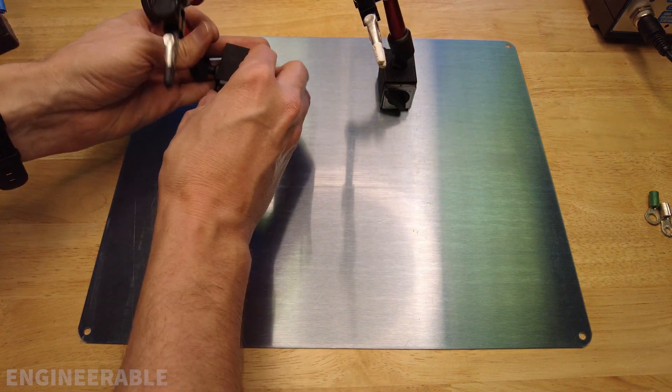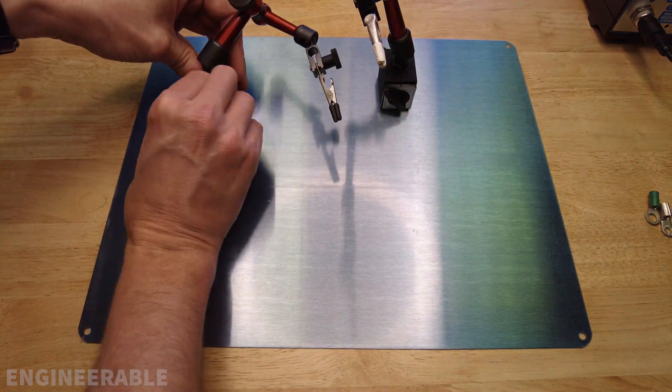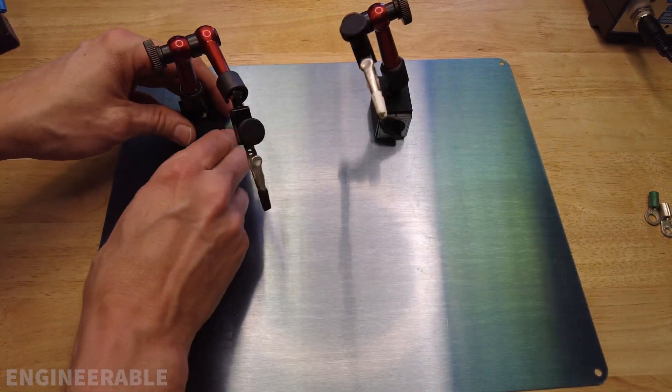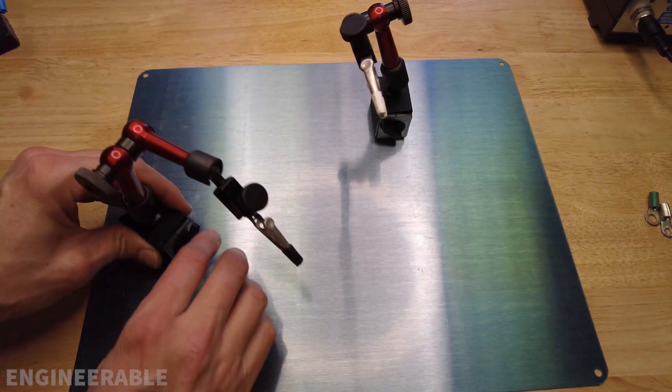So these magnets do attach to here. They're not quite as strong as they would be if there was a piece of plain steel. But then this allows you to put your helping hand clamps in any position you want.